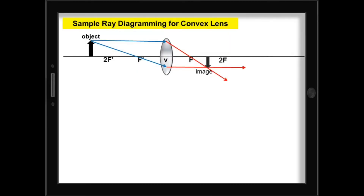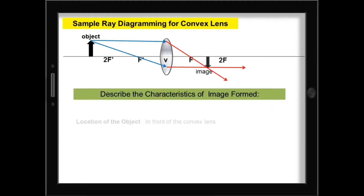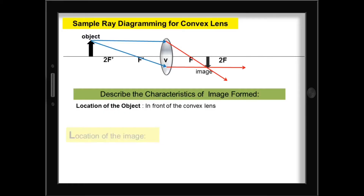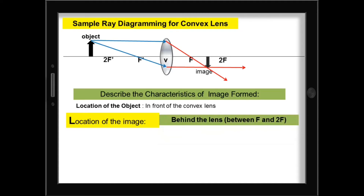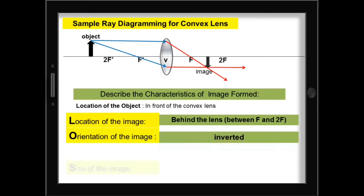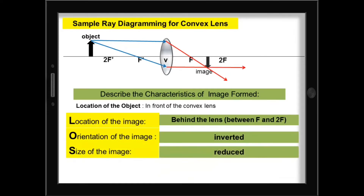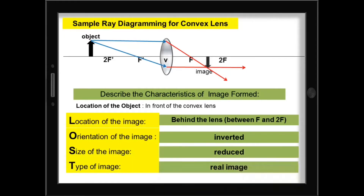Now we can describe the image formed by the convex lens through ray diagramming. The location of the object is in front of the convex lens. The location of the image is behind the lens, between the focal point and 2F. For the orientation of the image, it is inverted. For the size of the image, it is reduced or smaller. And for the type of image, it's a real image since the image is inverted.